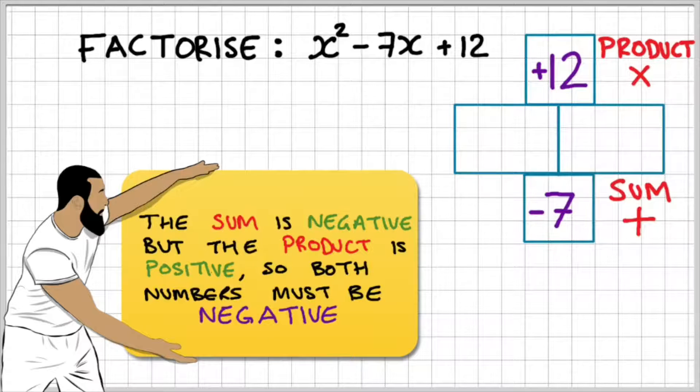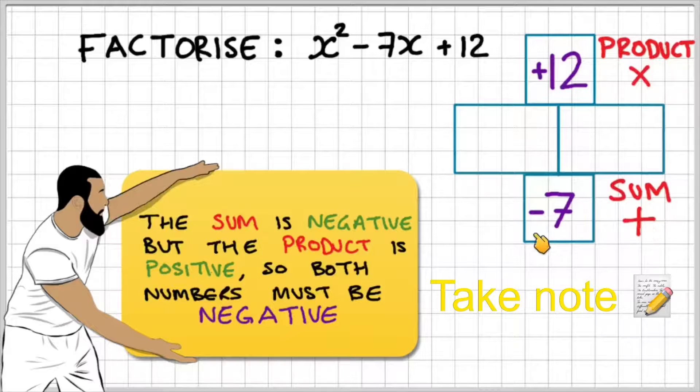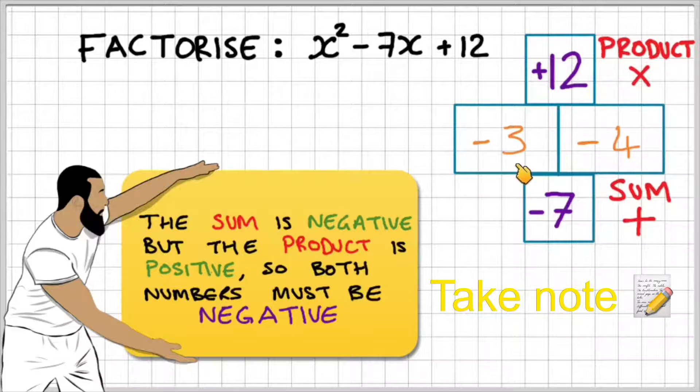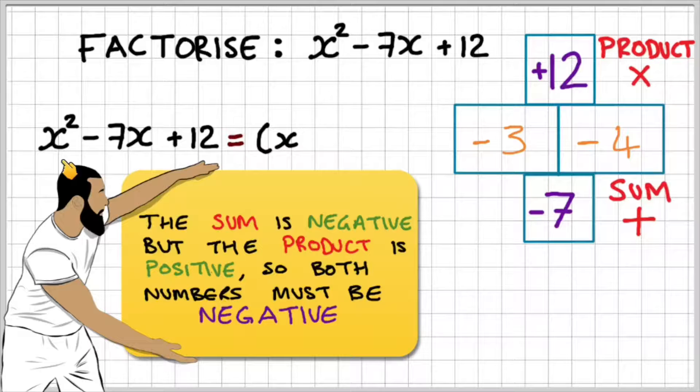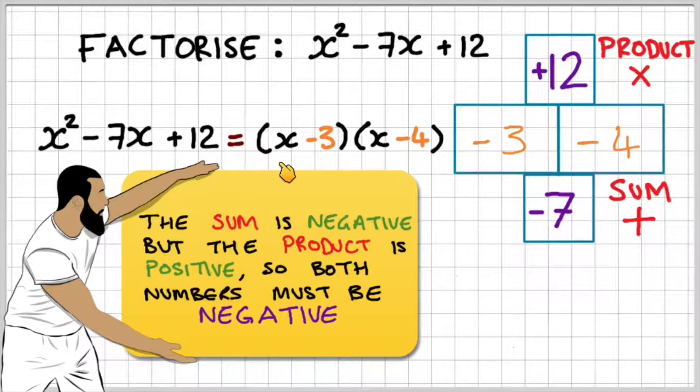Why? Think about it. This number times this number must give me a positive, and the sum of them must be negative. So we have negative 3 and negative 4. The product of these two factors gives us positive 12, and the sum gives us negative 7. Therefore, x squared minus 7x plus 12 is equal to x minus 3, x minus 4.